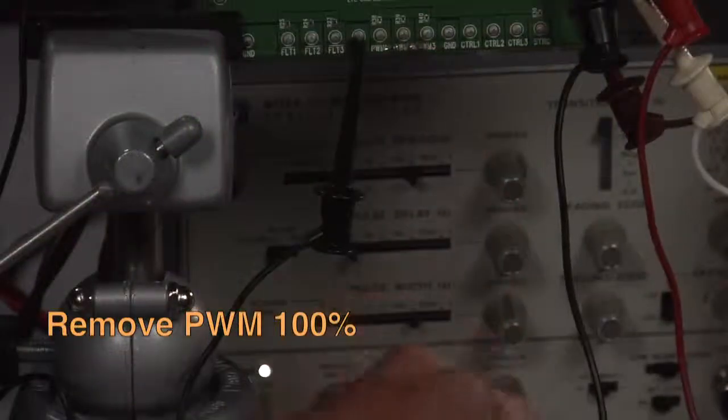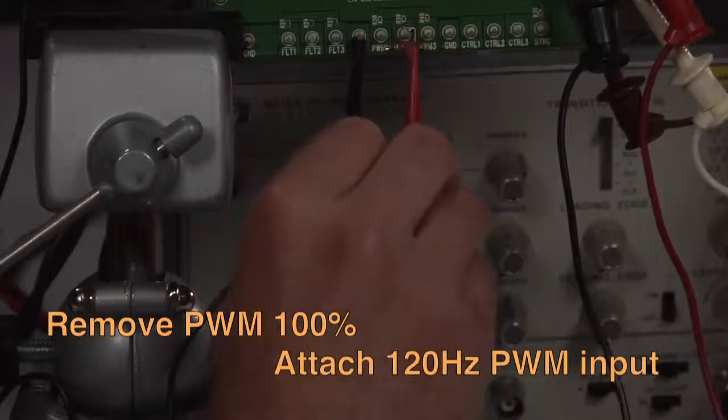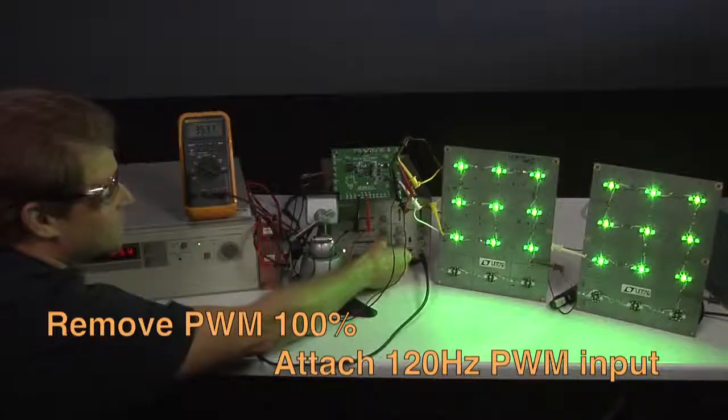PWM dimming operates down to 1000 to 1 ratio in this 70-watt automotive LED driver.